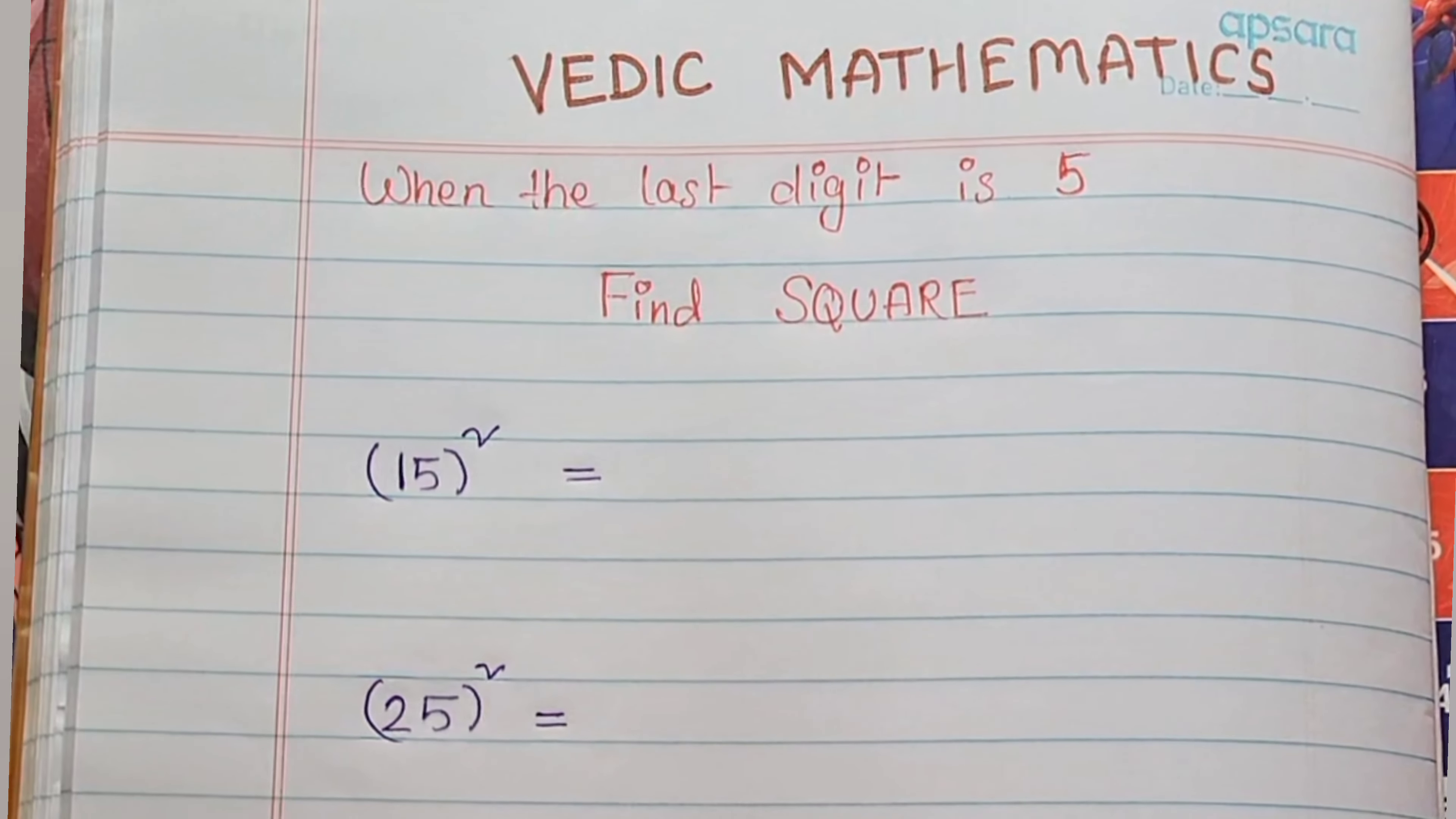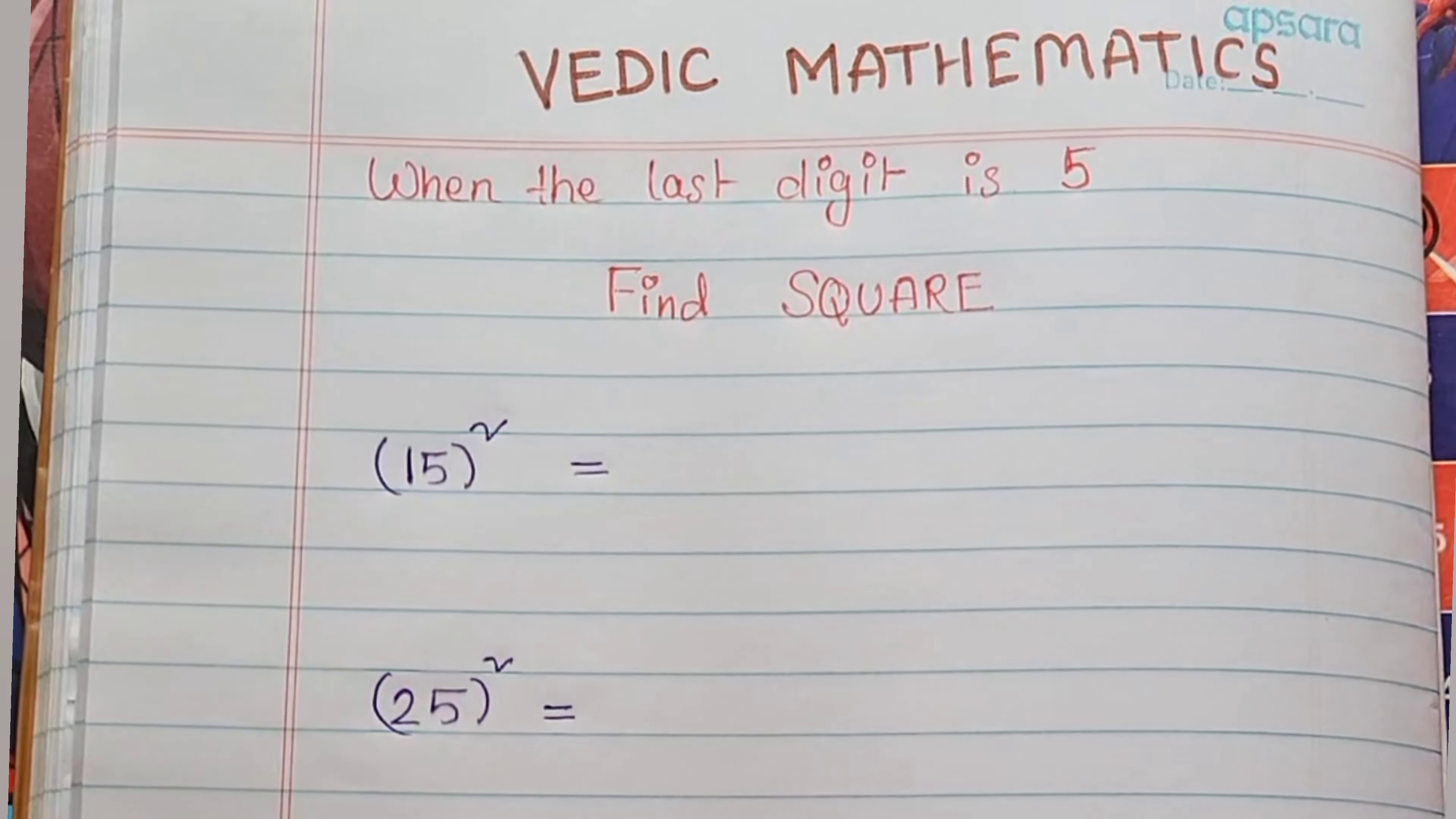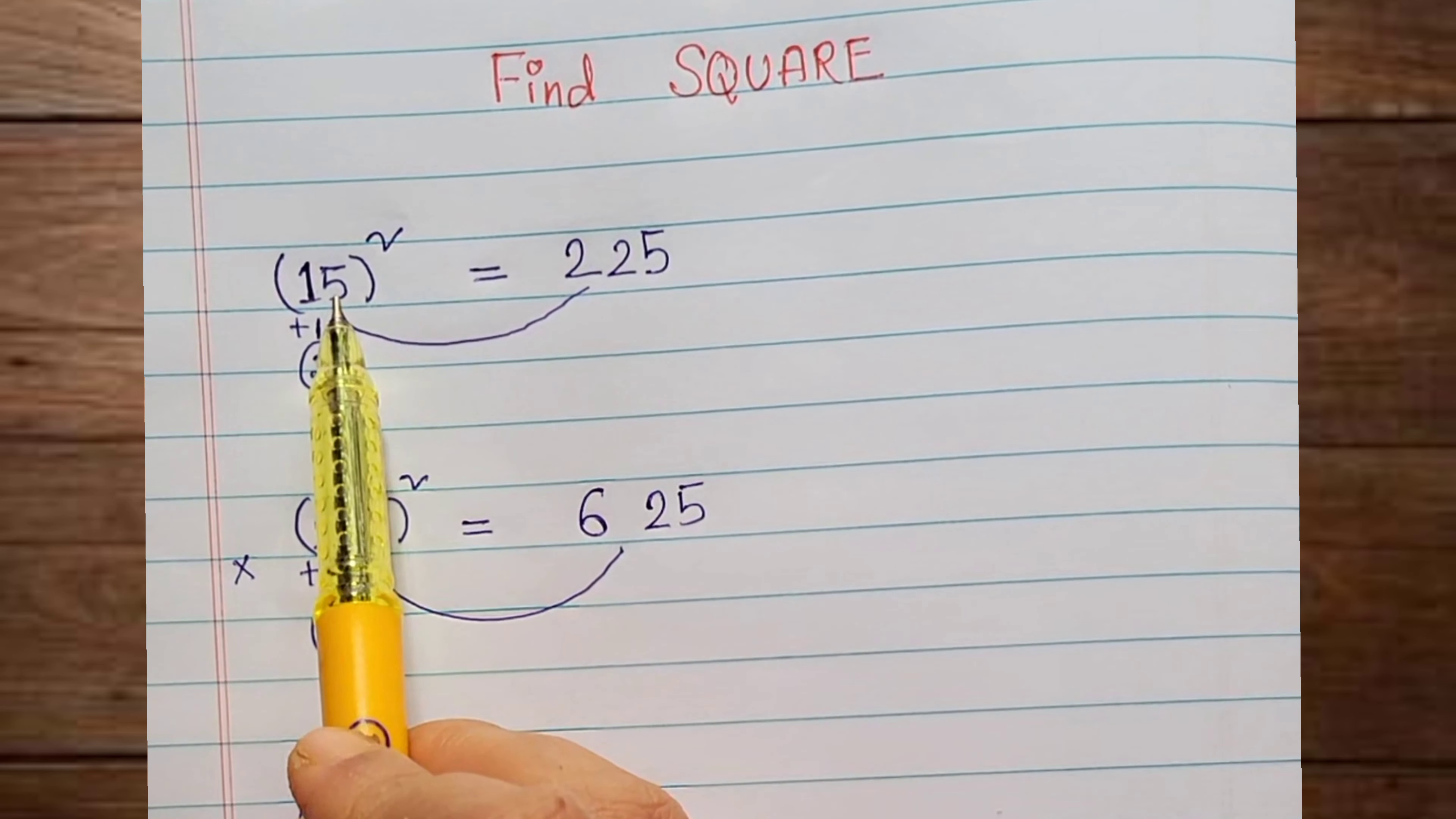In today's class, we find out the square root when the last digit is 5. Let's start my video.